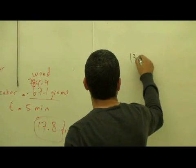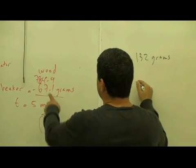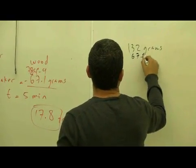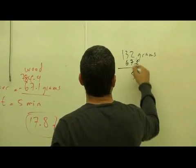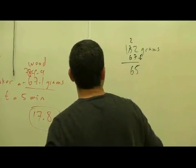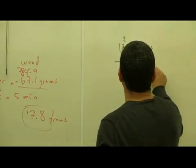So we weigh it: 132 grams. The beaker alone was 67.1, so let's just say 67. So that's 65 grams of ice that was melted.